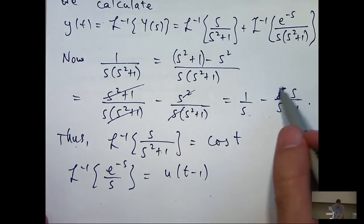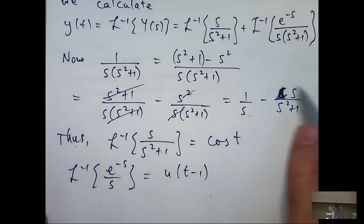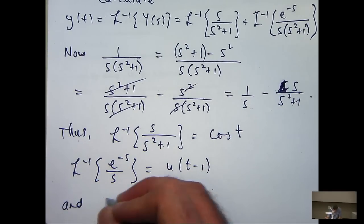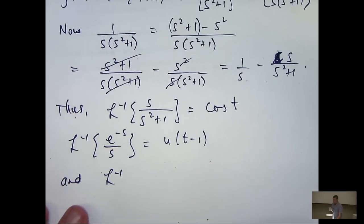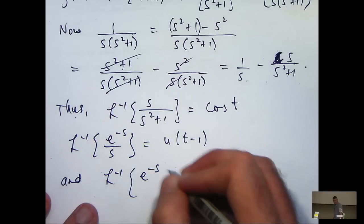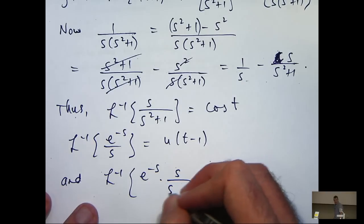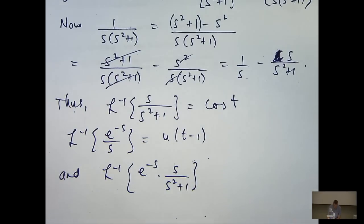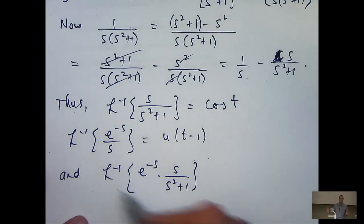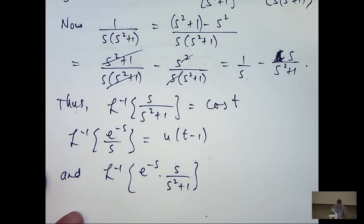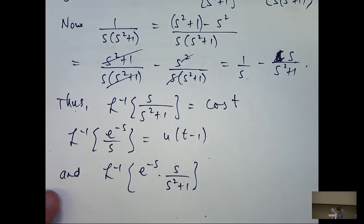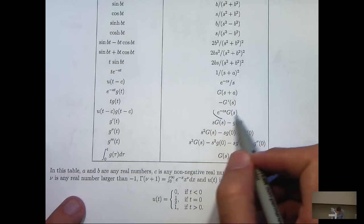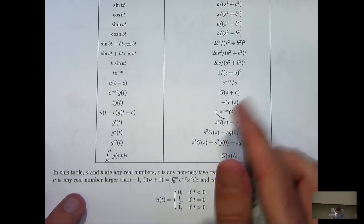And finally, we need to take the inverse transform of this times e to the minus s. Now, for this, it's not contained strictly in our table, but we're going to have to use the second shifting theorem to calculate this. So, our particular function of s is like this with c equals 1.